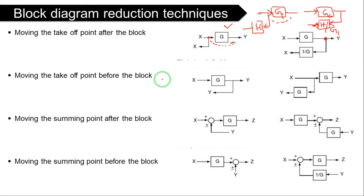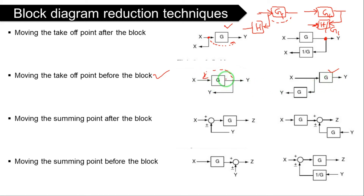Rule 5 is moving the takeoff point before the block. In this case, you simply multiply by the block gain. So if you move the takeoff point to the left side — before the block G1 — then the branch value becomes multiplied by G1. That is the resultant: move right, divide by block; move left, multiply by block.